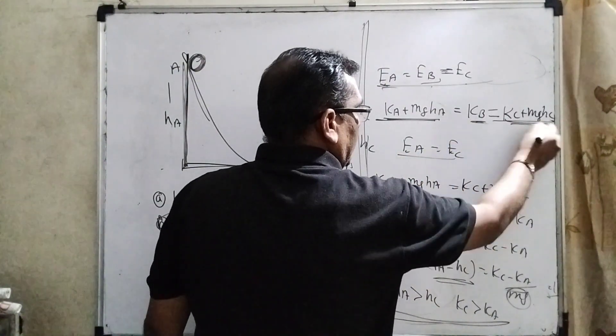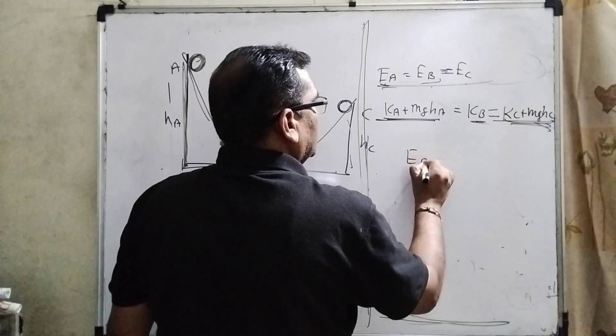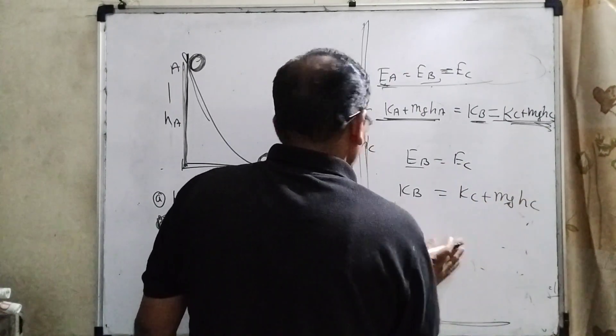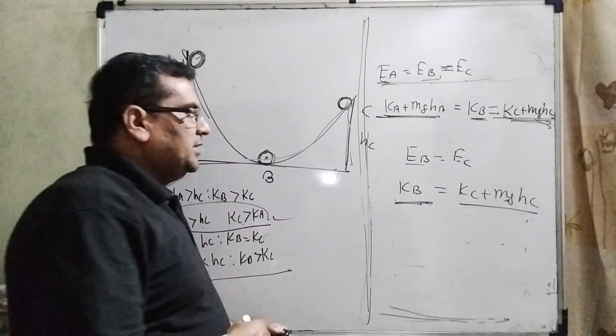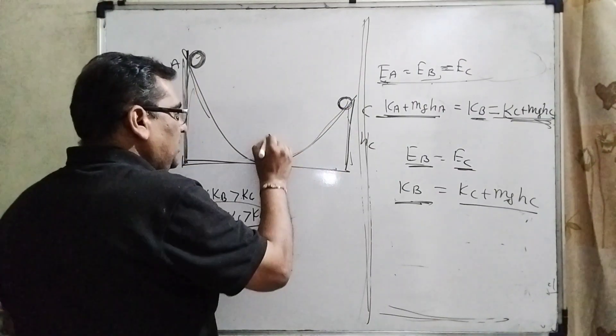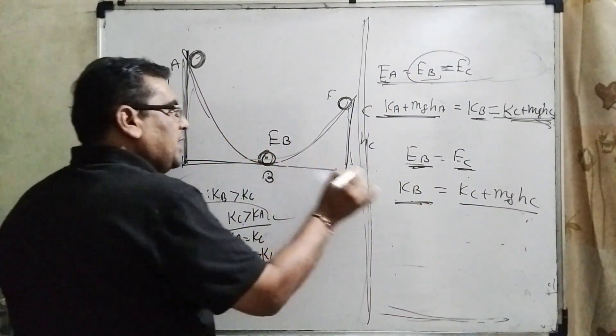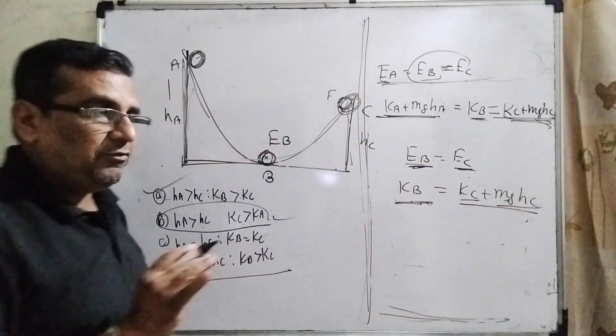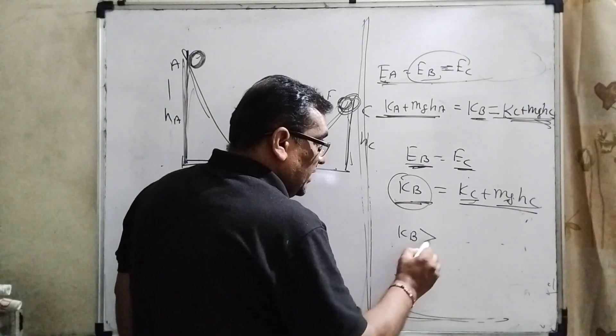Now, KB equals KC plus MGHC. In this case, you can see that EB equals EC, means the total energy at B equals the total energy at C. At point B, only kinetic energy is present. And at C, kinetic energy and potential energy, sum of two energies. This sum of two energies equals only one single energy at B, so KB is obviously greater than KC.